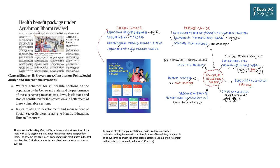Ayushman Bharat PM-JAY is a national public health insurance fund aiming to provide free health insurance coverage for low-income earners — roughly the bottom 50% of the population. The scheme provides free secondary health care for those needing specialist treatment and tertiary health care for those requiring hospitalization. It is a centrally sponsored scheme jointly funded by both the Union and states, and is part of India's national health policy. This topic is covered under GS Paper 2: welfare schemes for vulnerable sections and issues relating to social sector health management.